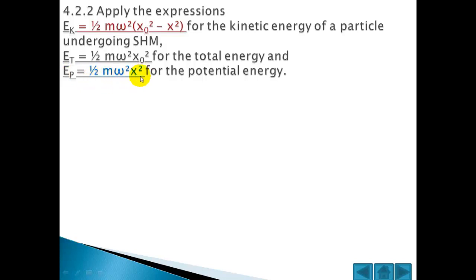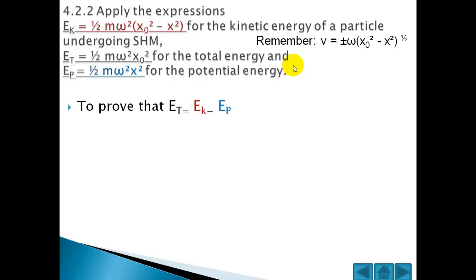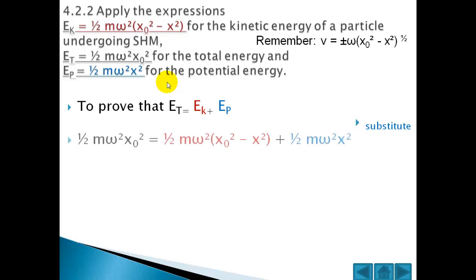These equations are in the data booklet. Now an exercise you can do is to prove that the total energy is equal to the kinetic energy plus the potential energy — so the total energy should be the sum of these two. On a scrap piece of paper you can just prove that. So let's substitute the equations in there: the total energy equals the kinetic energy plus the potential energy. See if you can show that the left hand side is equal to the right hand side.